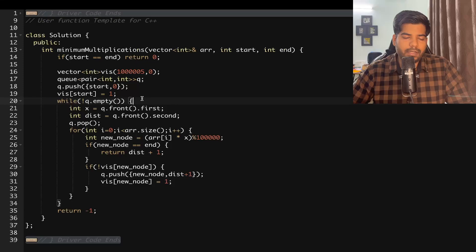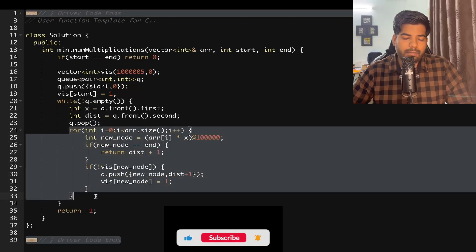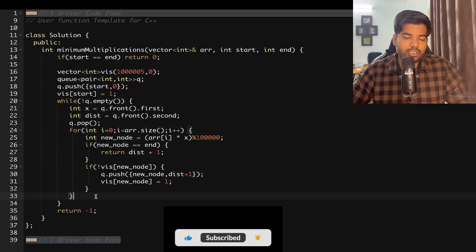It will be storing the node as well as the distance. Now we can push our start with the distance as zero, and then we can mark that node as visited. While my queue is not empty, we will do our BFS. Initially, my node is going to be q.front, which will give me this pair. We can get the start easily using dot first, and the distance is going to be q.front.second. We can pop that element out of the queue.